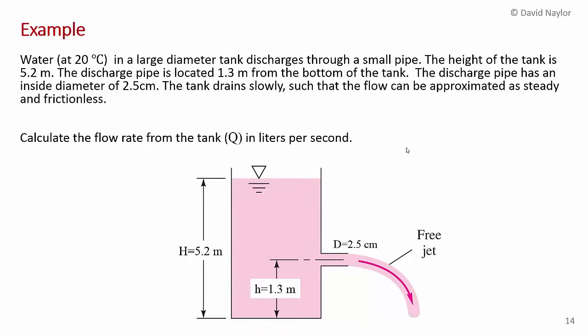So the example here is water at 20 degrees C in a large diameter tank discharges through a small pipe and you can see the pipe in the side of the tank here. The height of the tank is 5.2 meters. The discharge pipe is located 1.3 meters from the bottom of the tank. The discharge pipe has an inside diameter of 2.5 centimeters.